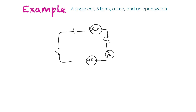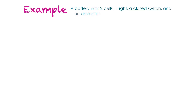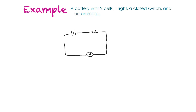In this example we're to draw a battery with two cells, one light, a closed switch, and an ammeter. I start with the two-cell battery, then the light, then a closed switch, then the ammeter — drawn as a circle with an A — and then close off the circuit. So we have our battery with two cells, one light, a closed switch, and an ammeter.